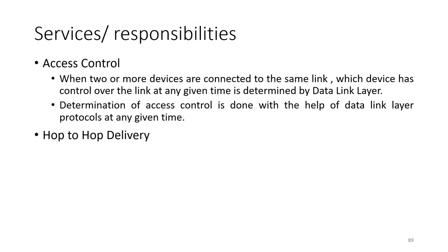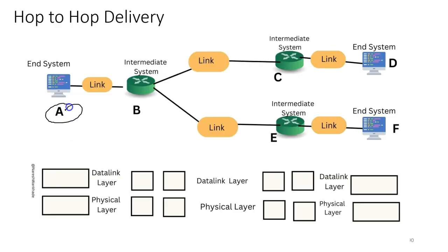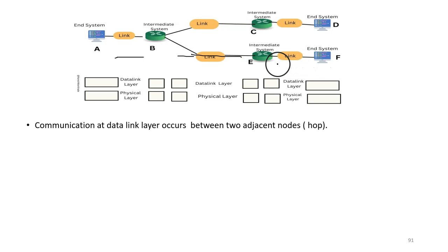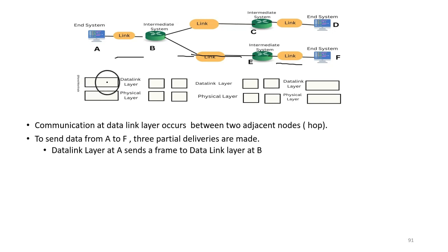The next service is hop-to-hop delivery, also known as node-to-node delivery. In this diagram, end system A is the sender and wants to send data to F, the receiver. Communication at the data link layer occurs between two adjacent nodes — communication between A and B, communication between B and E, and communication between E and F. To send data from A to F, three partial deliveries are made. The data link layer at A sends a frame to the data link layer at B through physical layers of A and B.